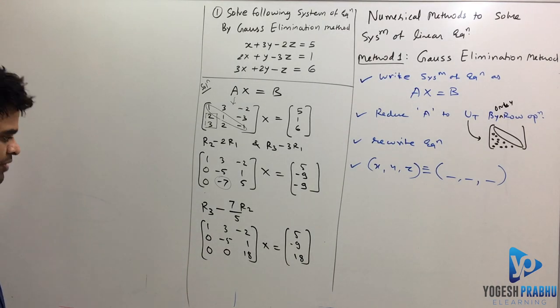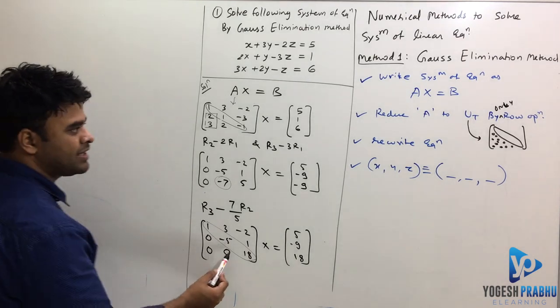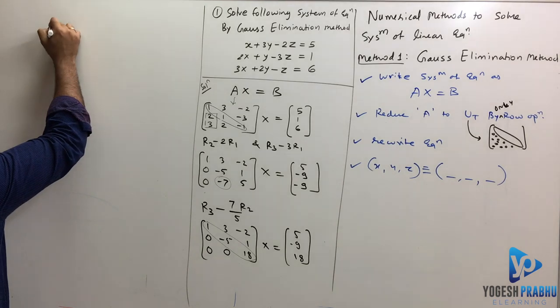So I found this matrix and this is clearly an upper triangular matrix. Now, at this point, as soon as you get an upper triangular matrix, you rewrite the equation. So let me do that.